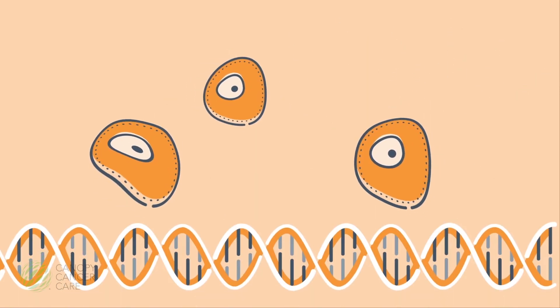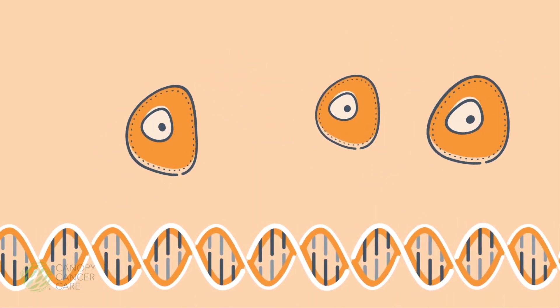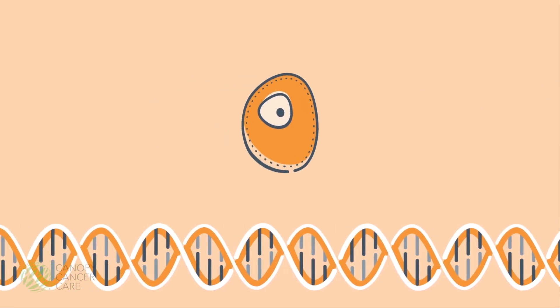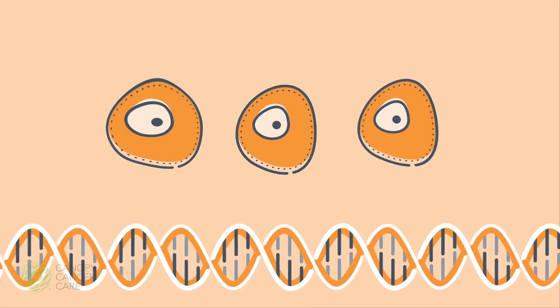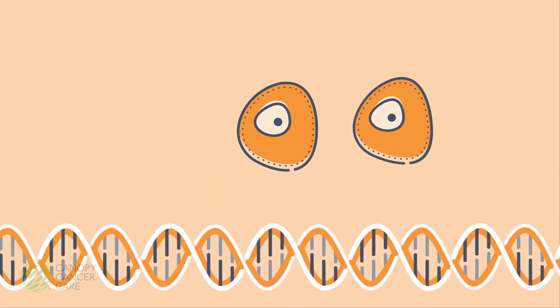When cells divide they make a copy of their DNA and genes so that each new cell has the same instructions. That copy also divides and so on. While older damaged cells are told to die off making way for new healthy ones,